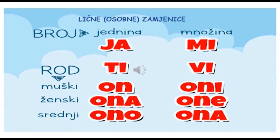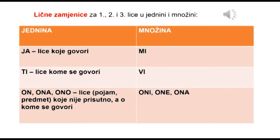Lične ili osobne zamjenice su: u jednini ja, ti, on, ona, ono; u množini mi, vi, oni, one, ona. Lična zamjenica ja označava lice koje govori; ti – lice kome se govori; on, ona, ono – lice koje nije prisutno i lice o kome se govori. U množini: prvo lice mi, drugo lice vi, treće lice oni, one, ona.